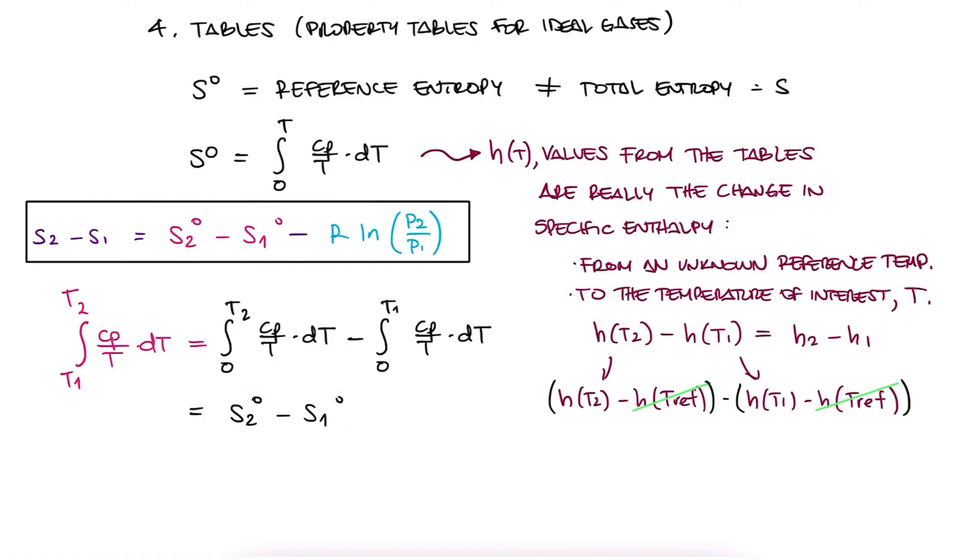Now like I just said, this is not the entirety of the entropy, because we still have the pressure term. And that's why it's only a reference entropy, and we use the degrees symbol. The change in entropy S2-S1 is then the specific reference entropy at 2 minus 1, minus R natural logarithm of P2 over P1.